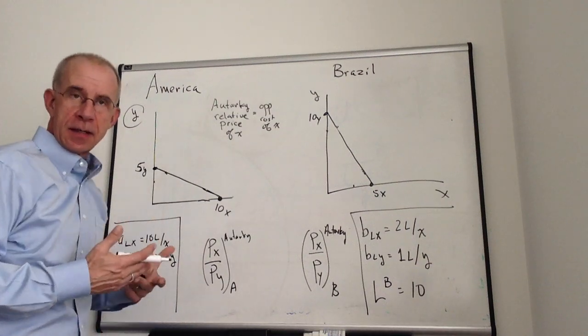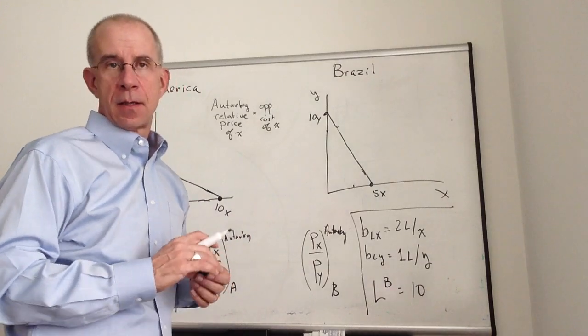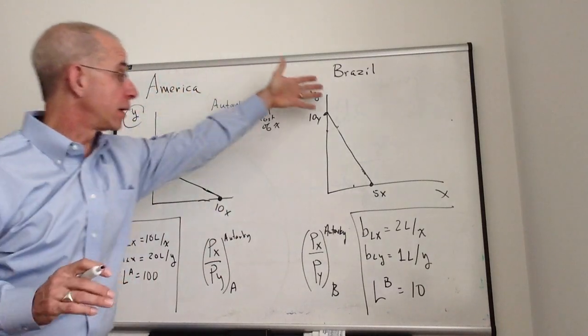So let's take a look at the possible relative prices that would allow countries to trade with each other. In this example, we've got America and Brazil.